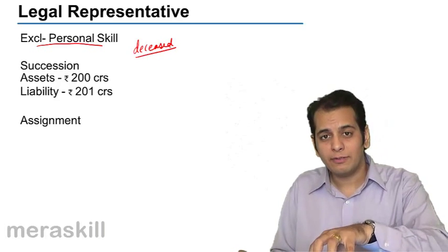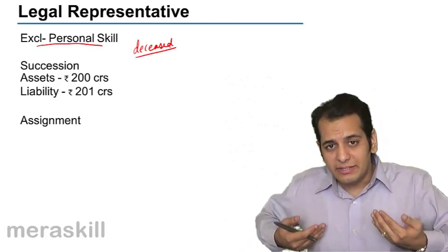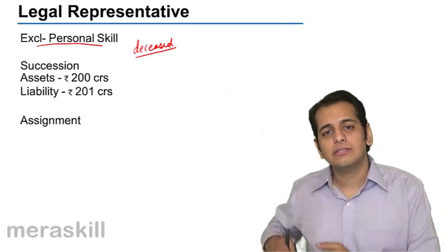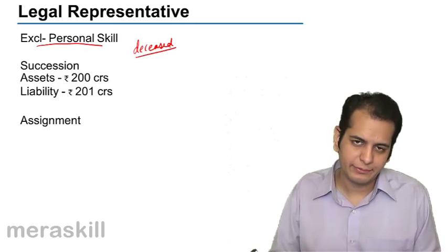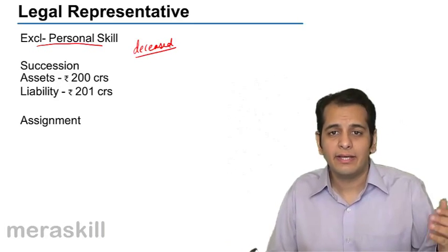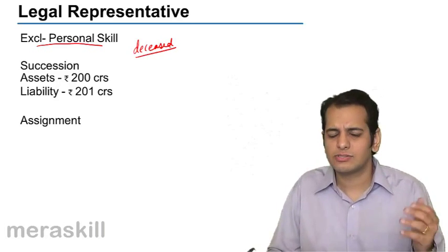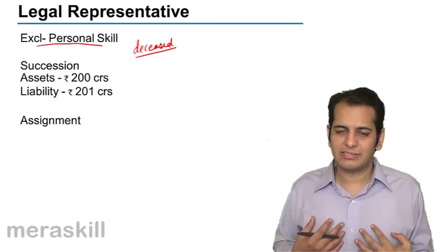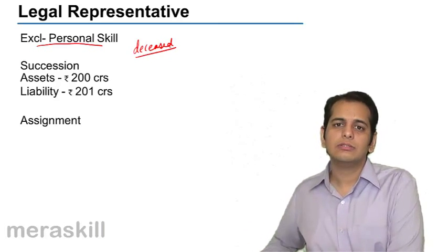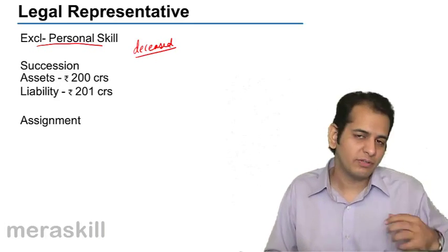Whatever the rights and liabilities, whatever the assets and liabilities the deceased person had will devolve now to his legal heir. That means now they will belong to the legal heir. This is called as inheritance in normal parlance, as we generally understand it. Whatever the father had after his death will go to the sons and his daughters or whoever is his legal heir, whoever is left behind.